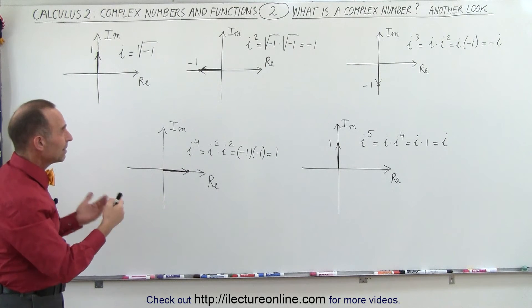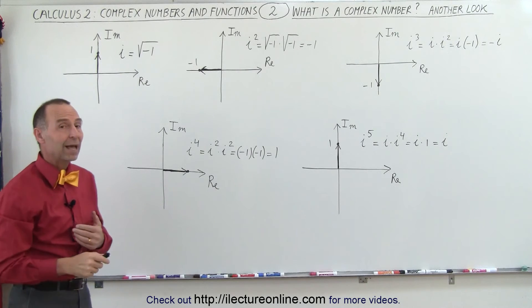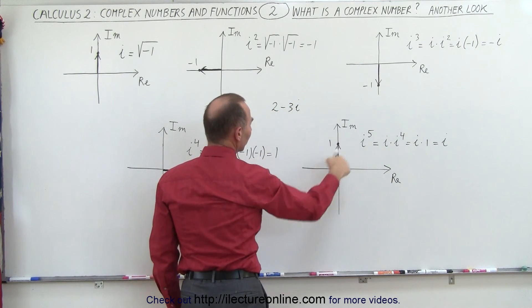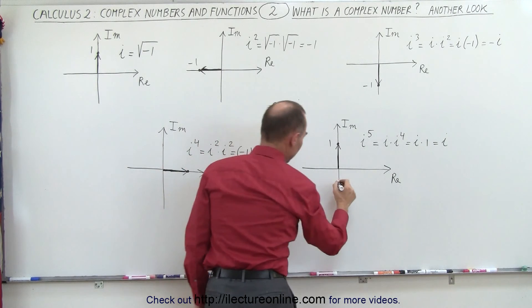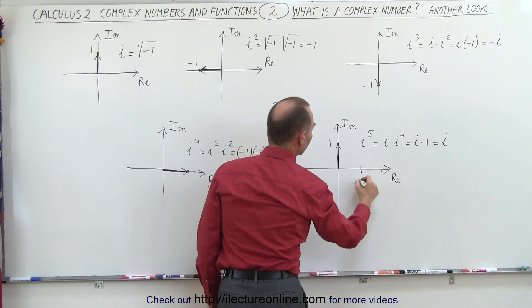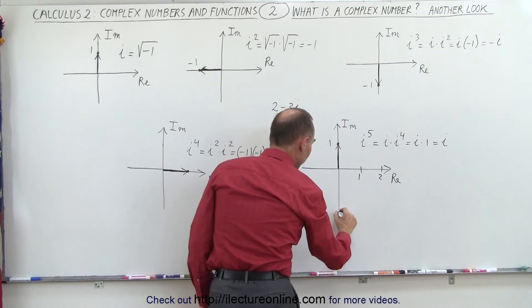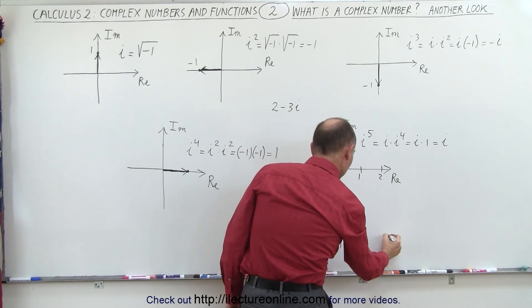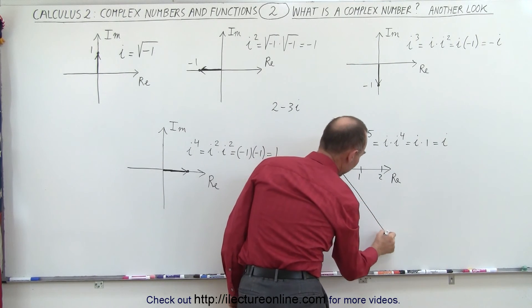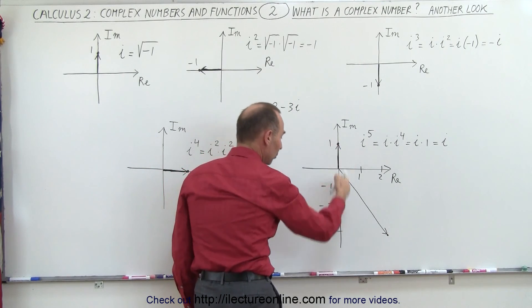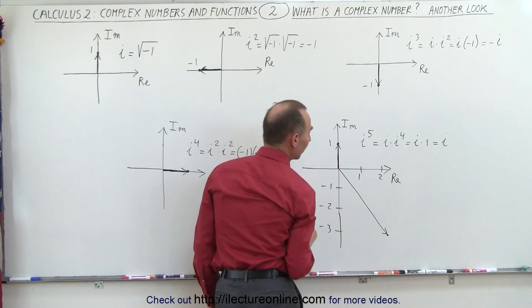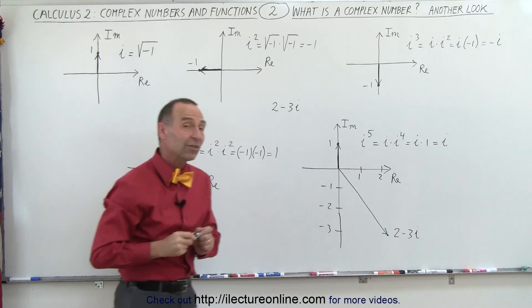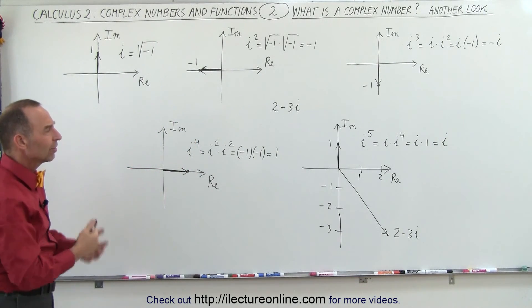So there's a nice, neat representation of what the number i is. Now, what if we have a complex number that looks like this? For example, 2 minus 3i — can we represent that on this axis? Well, yes. We go two units in the positive real direction, and negative three units in the negative imaginary direction. We have the point where those two come together, and this vector represents this complex number: two units in the positive real direction and three units in the negative imaginary direction. So this is the number 2 minus 3i.